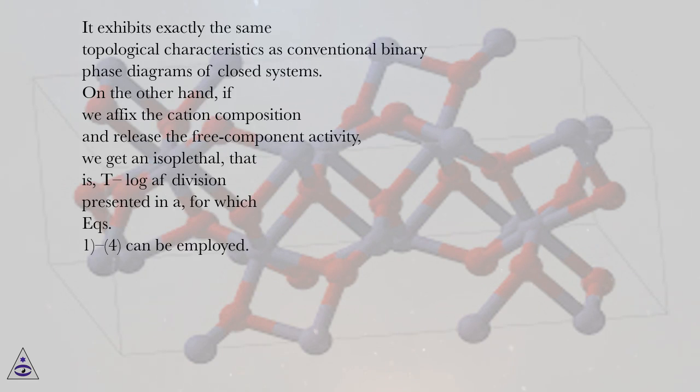It exhibits exactly the same topological characteristics as conventional binary phase diagrams of closed systems. On the other hand, if we affix the cation composition and release the free component activity, we get an isoplethyl, i.e., T-log AF division presented in A, for which equations 1-4 can be employed.